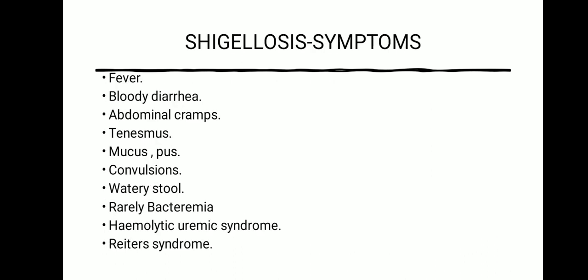Next, we will see the common symptoms of Shigellosis. Shigellosis is characterized by fever, bloody diarrhea — that is, the presence of blood in the diarrheal stool — and abdominal cramps. Tenesmus, that is the continual or recurrent inclination to evacuate the bowel, and presence of mucus and pus in the stool sample. Convulsions, that is seizures, are a medical condition where the body muscles contract and relax rapidly and repeatedly, resulting in uncontrolled action of the body.